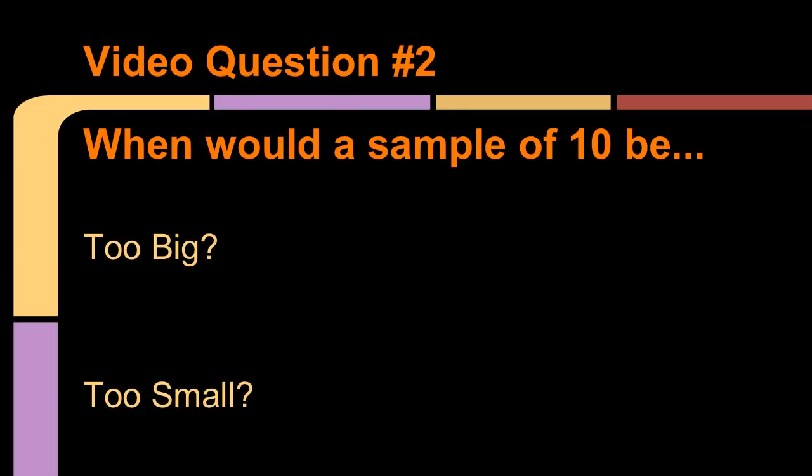This one is like video question number one. So number two says, give me a time, a population, when a sample size of 10 would be too big. And alternatively, when would a sample size of 10 be too small? I'm looking for instances when those would not work. Write out your answer and come back when you're ready for question number three.